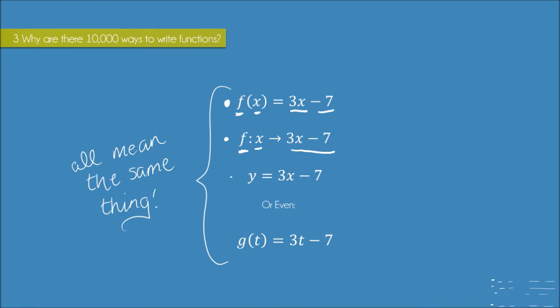We could instead give our output variable a letter, so we could say that our output is called y, and then y, our output, is equal to 3 times our input minus 7.